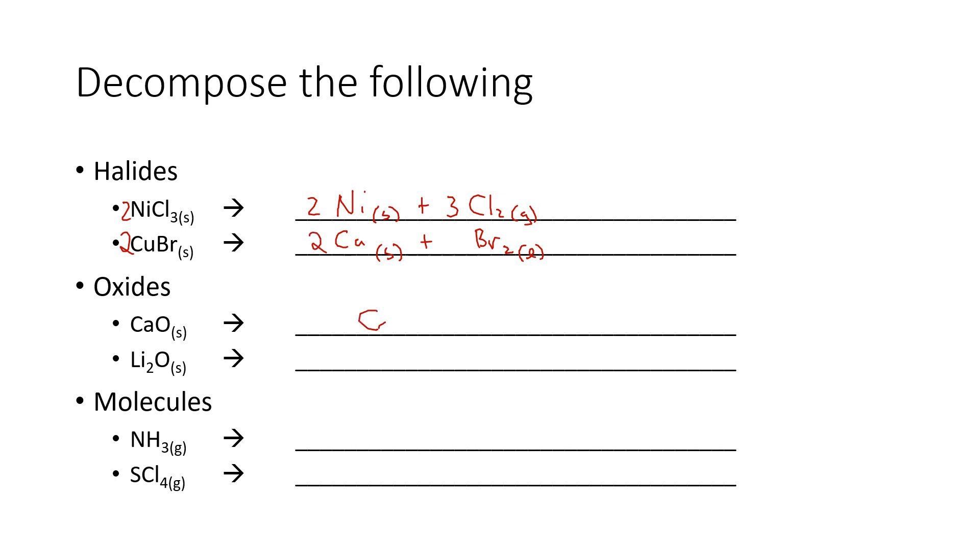For our oxides we're going to have calcium and some oxygen. Calcium is a metal, it's a solid, oxygen is a gas, and we need to balance this out with some twos. Finally we got lithium, also a solid metal, and oxygen still a gas. We need to balance this out, so I need two here which means that needs to be a four.